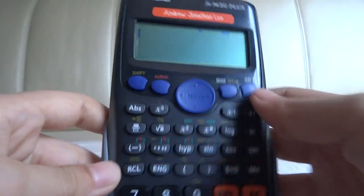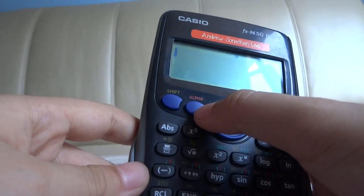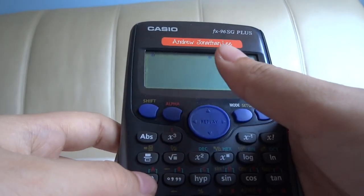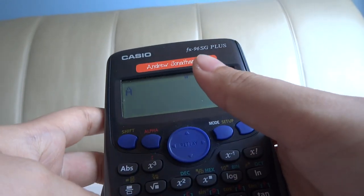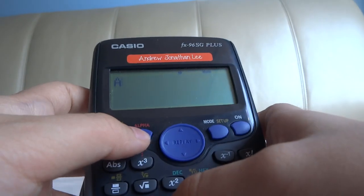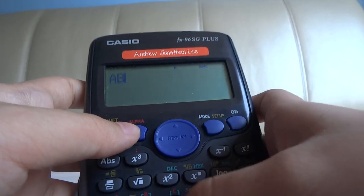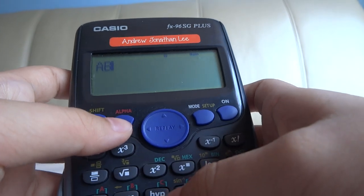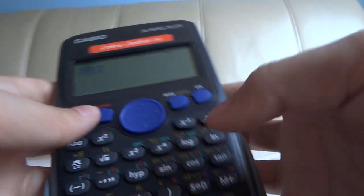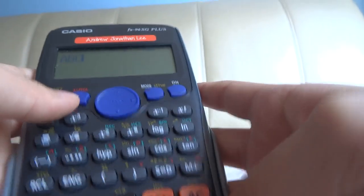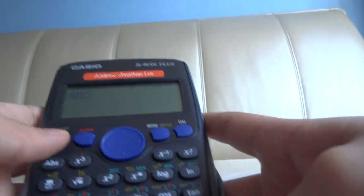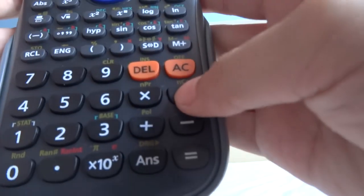Okay, so for typing A, it's right here. You type alpha negative. So this gives you A over here. And then do the same for B. Alpha, this is degrees. And then C, you can use alpha hyper. Or you can also use NCR, which is shift divide.